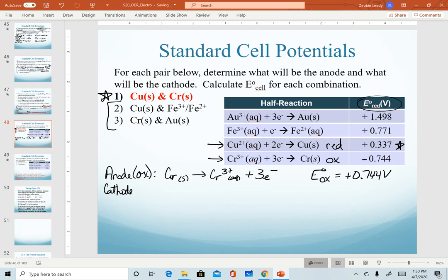My cathode where reduction is going to occur will be the copper two plus ion being reduced down to copper metal once it gains two electrons.